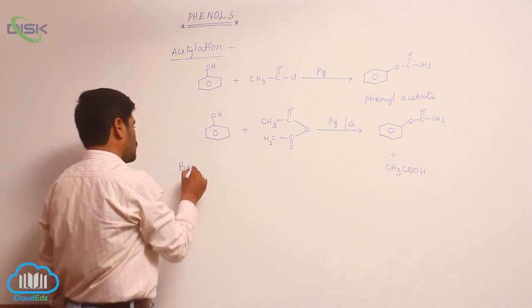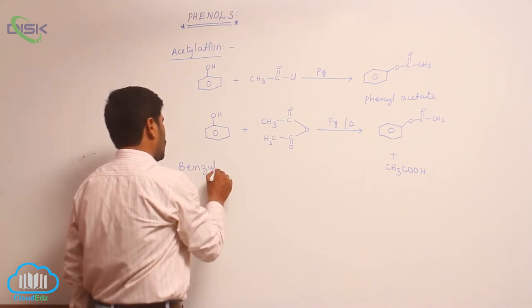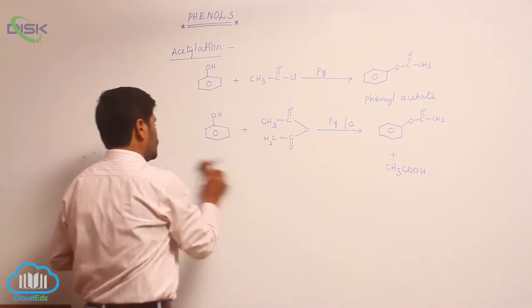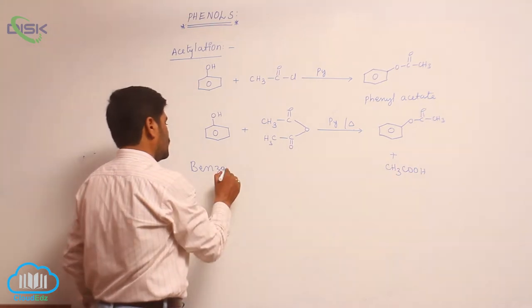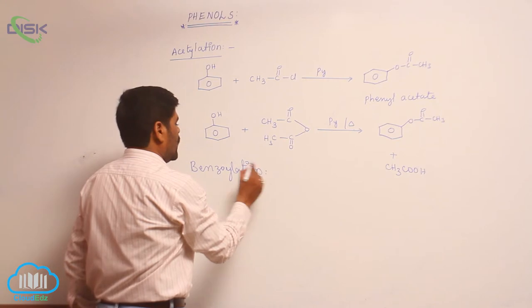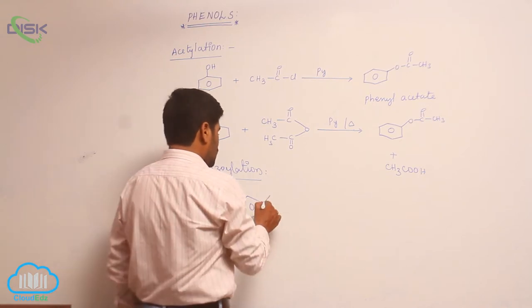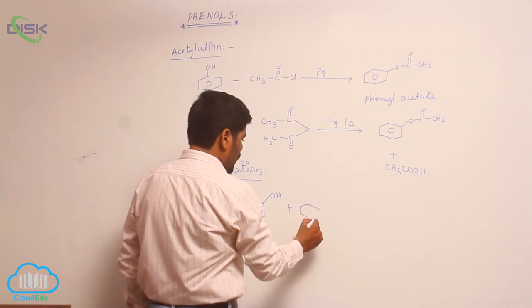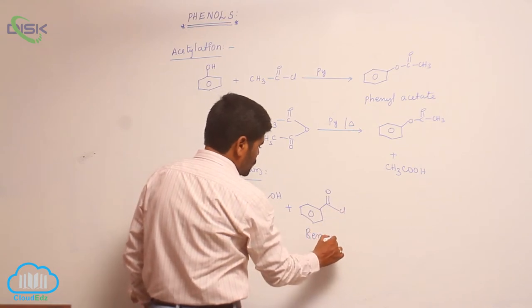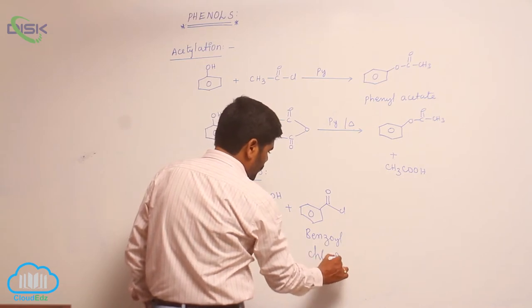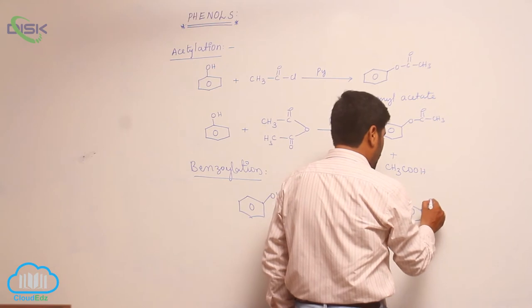Next is benzoylation. Phenol reacts with benzoyl chloride (C=O-Cl), known as benzoyl chloride, to form phenyl benzoate.